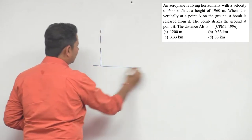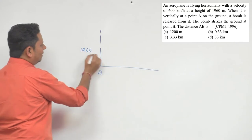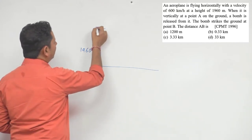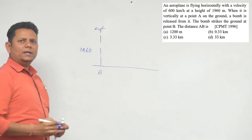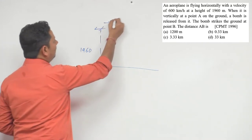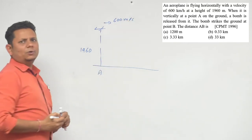Horizontal projectile motion. So this is the scenario. You have point A. Directly above at 1960 meters, an aeroplane is flying. Let's say this is our aeroplane. And the aeroplane dropped a bomb here. When the bomb was dropped, its speed was 600 meters per second.